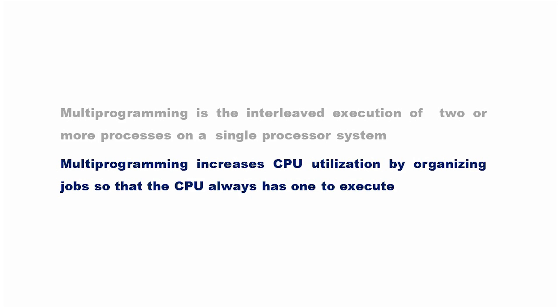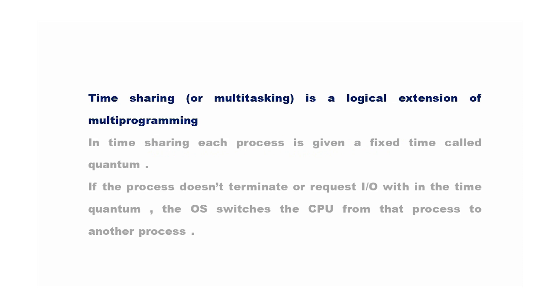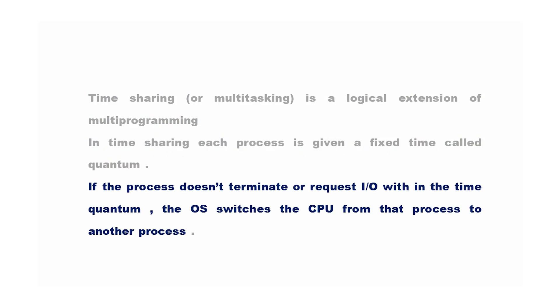Though multiprogramming increases resource utilization, the user cannot interact with any program while it is in execution. Time sharing, or multitasking, is a logical extension of multiprogramming. In time sharing, each process is given a fixed time called a quantum. If the process does not terminate or request an I/O operation within the time quantum, the operating system switches the CPU from that process to another process.